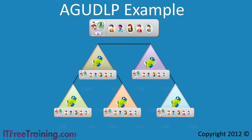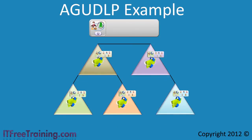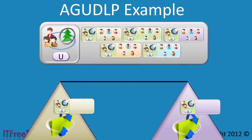Now look at what happens when global groups are added. A global group can be created in each of the five domains, which allows an administrator in each domain to have control over the users in that group. Since the group is a global group, you can be assured that administrators from each domain are not adding users from other domains. Users that need to be added to each group will have to go through the approval process for their company. Next, these global groups are added to the universal group, which acts as a container for all the global groups.